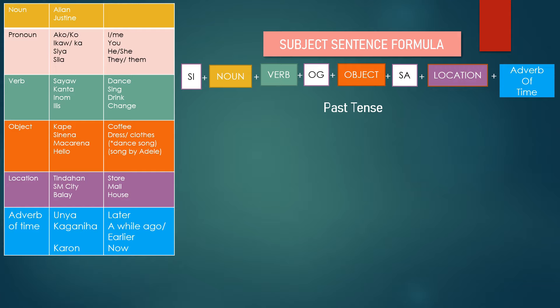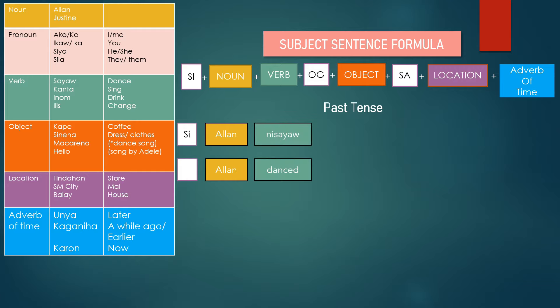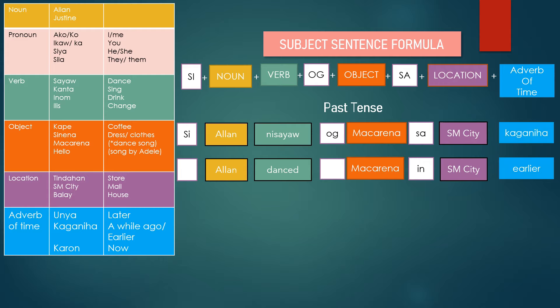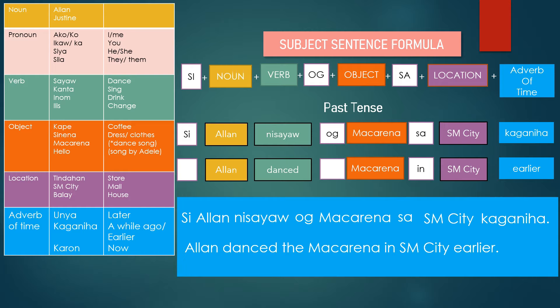All we need to do is add the adverb of time at the end of the sentence. So we have: Si Alan, and then the past tense verb Ni Sayaw, and then we add Og as our object marker, and then our object is Makarena, then the preposition Sa, then the location SM City, and then the adverb of time Kaganiha. For something that happened in the past, we use Kaganiha, which means earlier or a while ago.